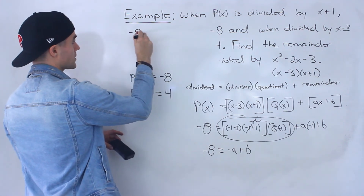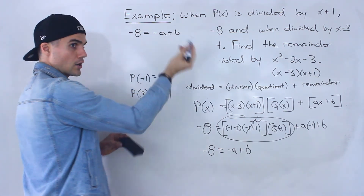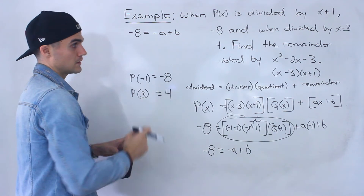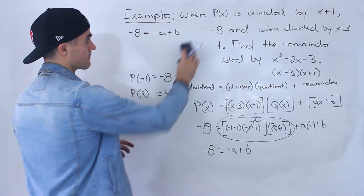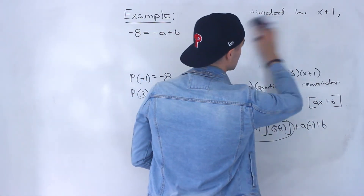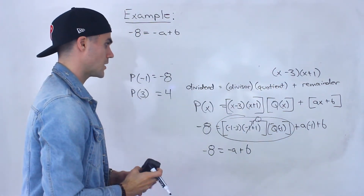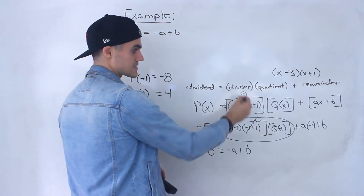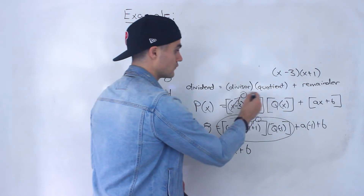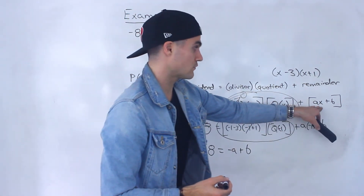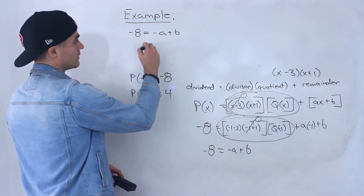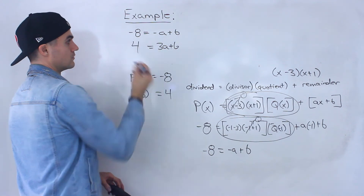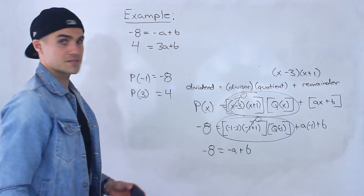Two unknowns, so we need two equations. We already have one. The other equation comes from p of three equaling four. Following the same process, if we plug in three for all the x's, the x minus three bracket goes to zero, making the whole quotient term zero. Plugging three into ax plus b gives 3a plus b, and p of three equals four. So our second equation is: four equals 3a plus b.